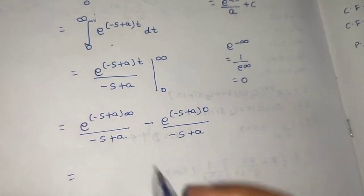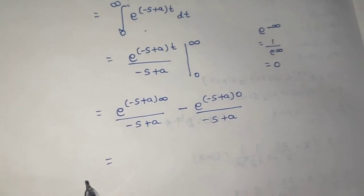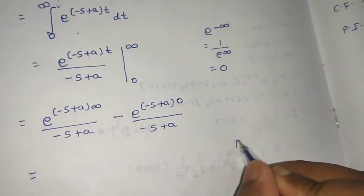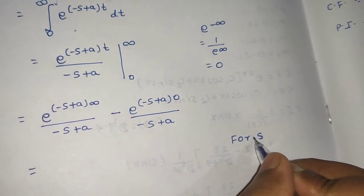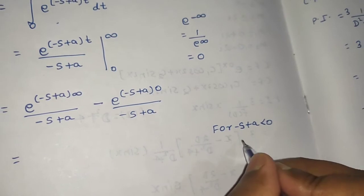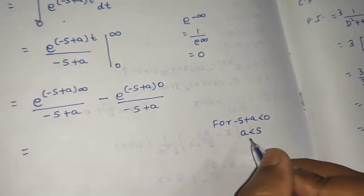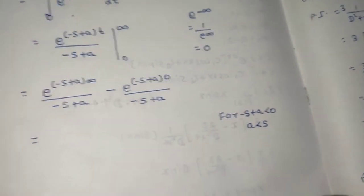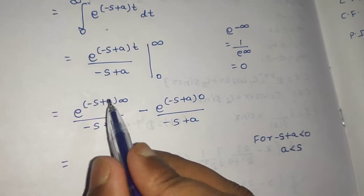So, I want that this thing become negative so I am putting a condition that for minus s plus a negative so a should be less than s. So, this is my condition and for this condition, this will become negative.